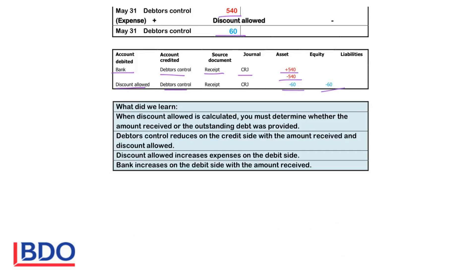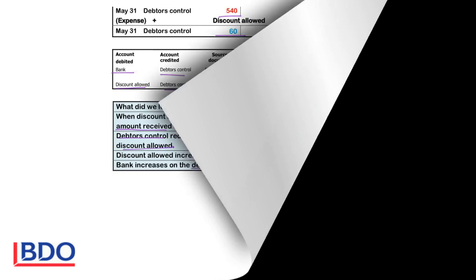When discount is allowed, you must determine whether the amount received or the outstanding debt is provided to ensure you use the right calculation. The debtors control reduces on the credit side with the amount received and with the discount. Discount allowed increases expenses on the debit side so that profit will decrease. Bank increases on the debit side with the amount received because assets increase on the debit side.